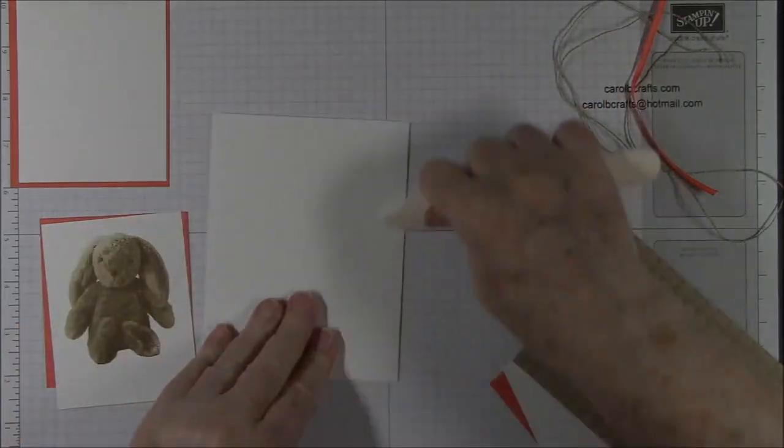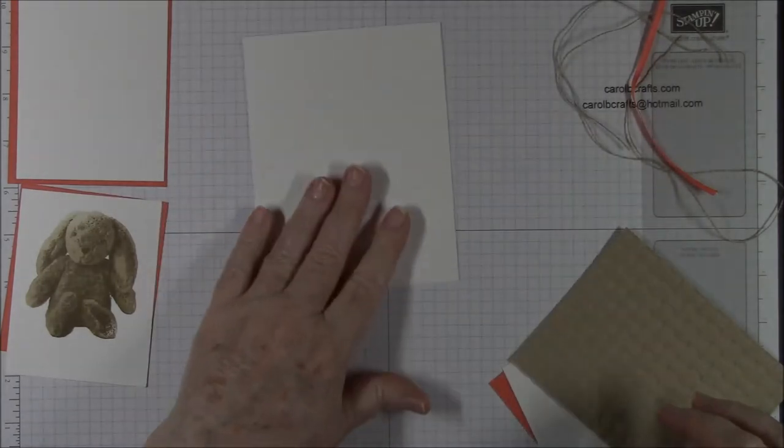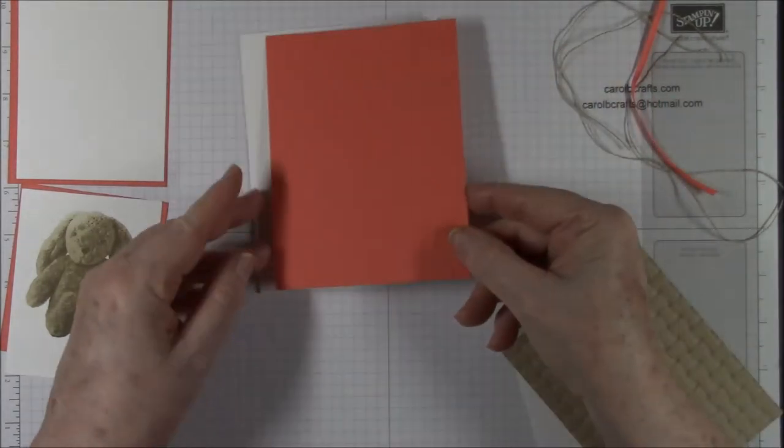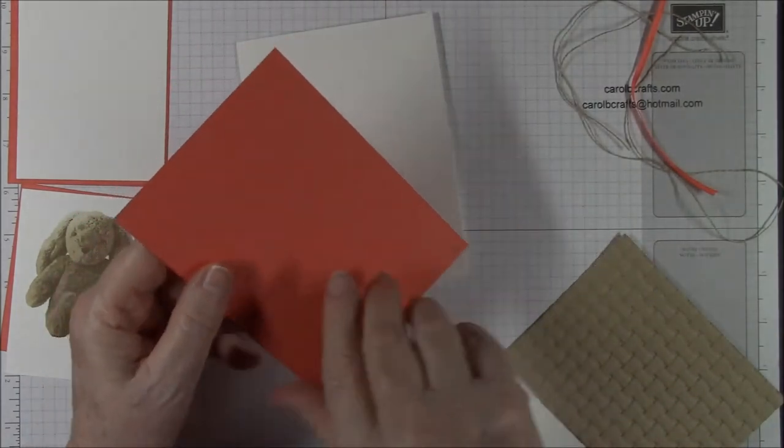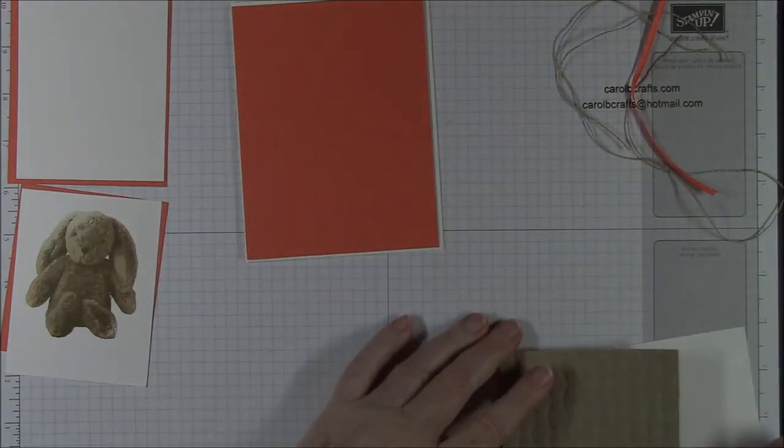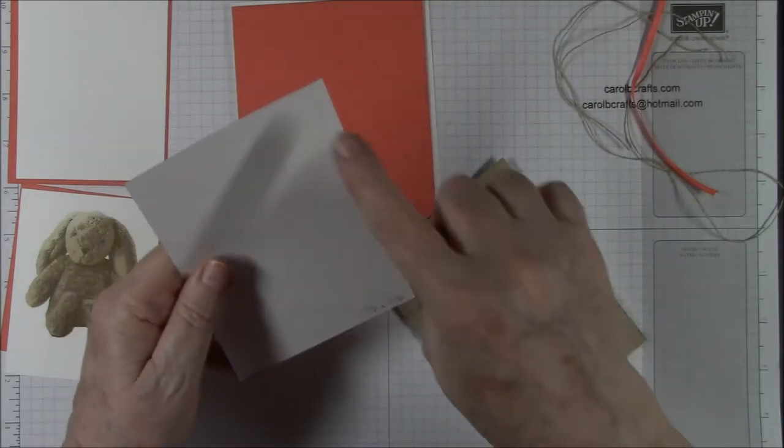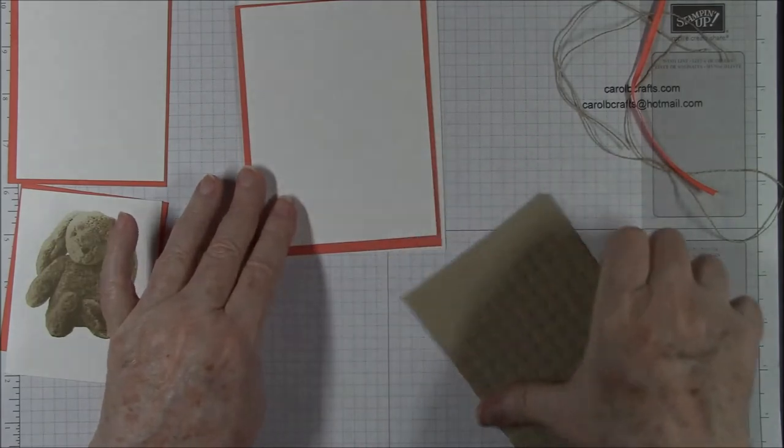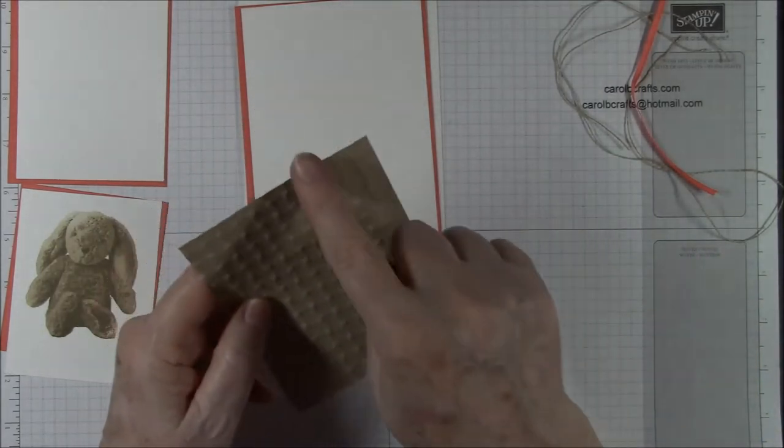Okay, so here's our card base. This is the Whisper White, and on top of that is going to go our Calypso Coral, and that is 4 1/8 by 5 3/8. It's going to go there. On top of that, a piece of Whisper White, 3 7/8 by 5 1/8. And on top of that we've got our embossed Crumb Cake, 3 and 3 quarters by 5.